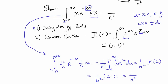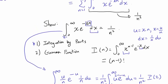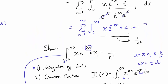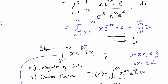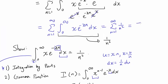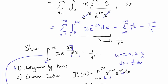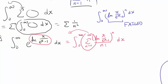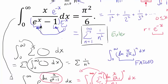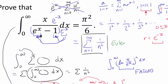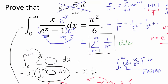Of course, you can always use integration by parts if you don't know the gamma function. But either way, we have shown that our original integral equals summation from n equals 1 to infinity of 1 over n squared. And Euler kindly proved for us that this equals pi squared over 6. So we have proven that the integral from 0 to infinity of x over e to the x minus 1 dx is pi squared over 6.